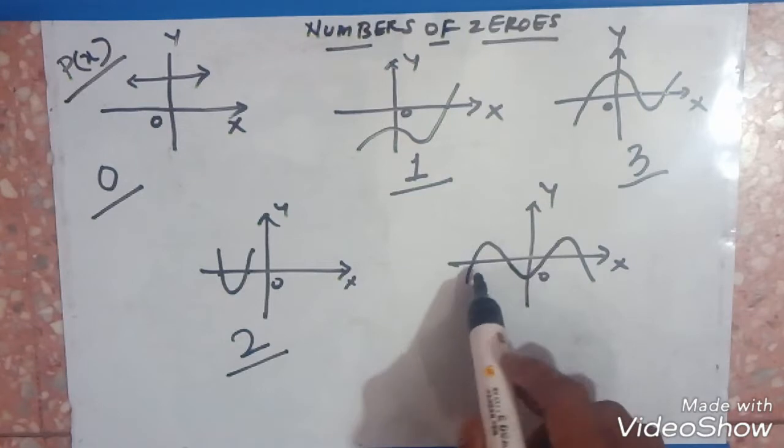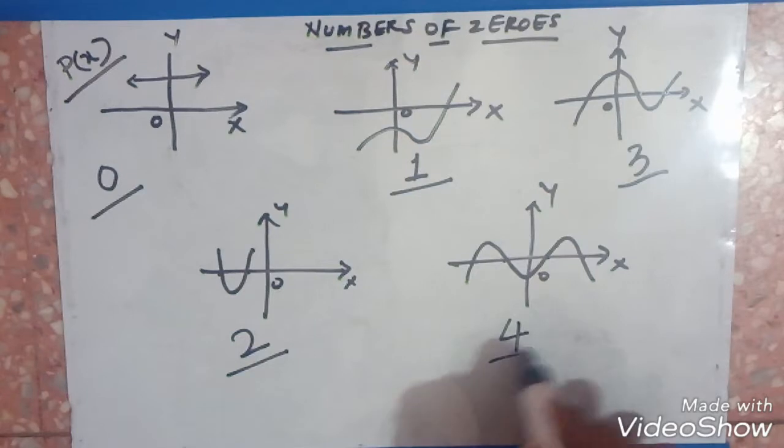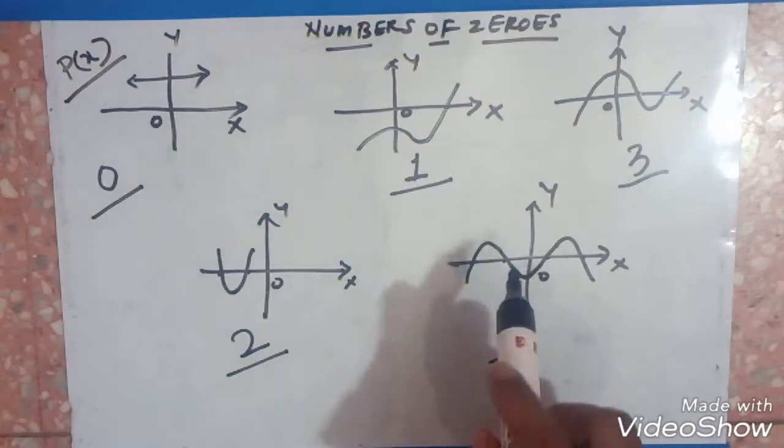In the last graph, you can see 1, 2, 3, and 4. So the number of intersections are 4. The number of zeros are 4. In this case, this is how the way to find out the number of zeros.